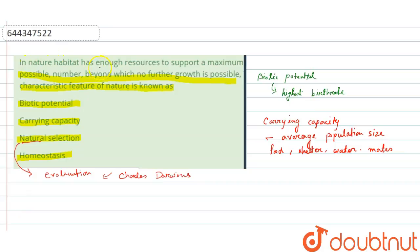in the natural habitat has enough resources to support a maximum possible number and where further growth is not possible. So that characteristic feature of nature is known as biotic potential, because we have seen here it will be controlled by the highest birth rate, that means the maximum number of possibilities is done by biotic potential.